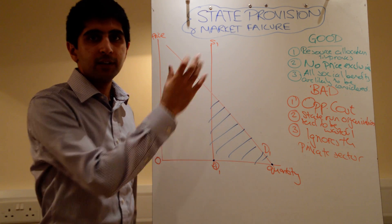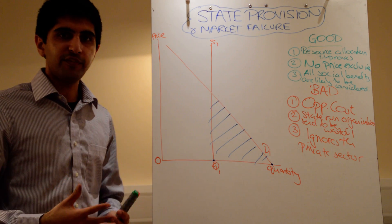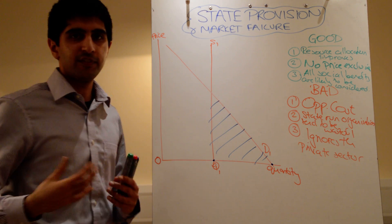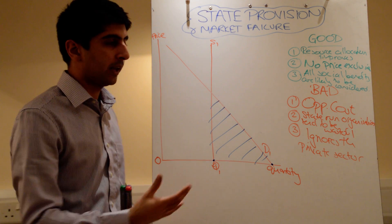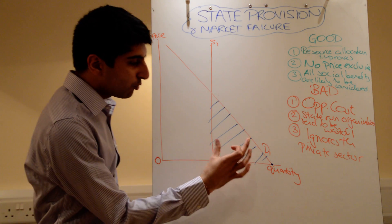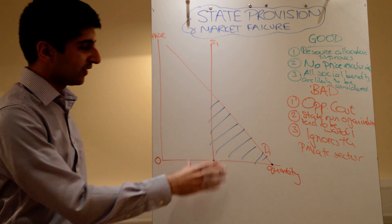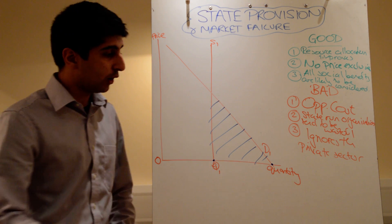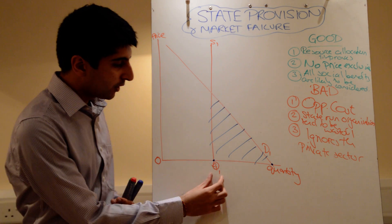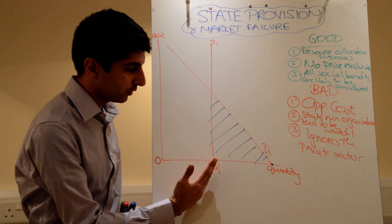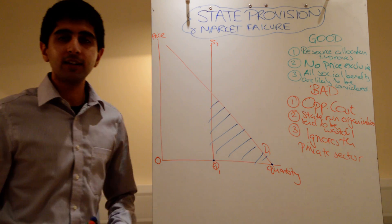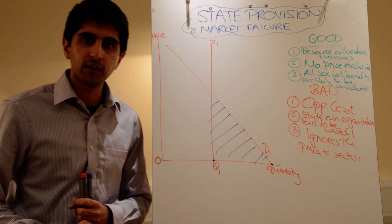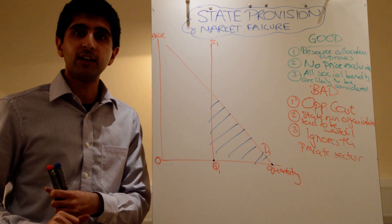Now, what does the effect of state provision depend on? So the effect in solving market failures, what does state provision depend on? Well, one, how can we ration this excess demand? We had a big excess demand here. We've got loads of people that want it, but because resources are limited, the government hasn't provided enough resources. How do we ration the excess demand? Well, that's a very normative judgment.